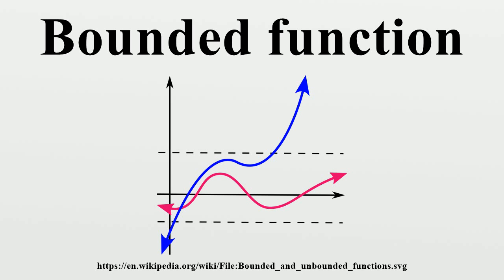If this is the case, there is also such an m for each other a by the triangle inequality. Examples: The function f: ℝ → ℝ defined by f = sin is bounded. The sine function is no longer bounded if it is defined over the set of all complex numbers.